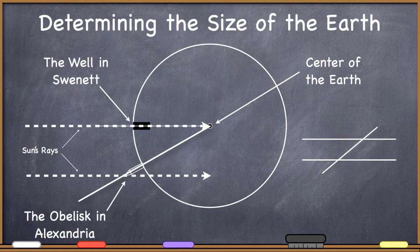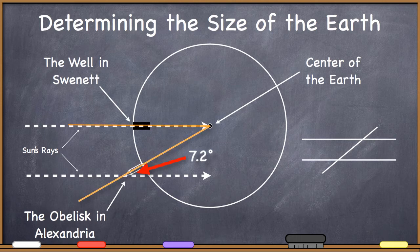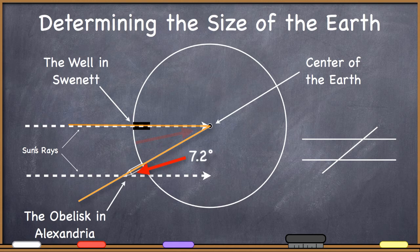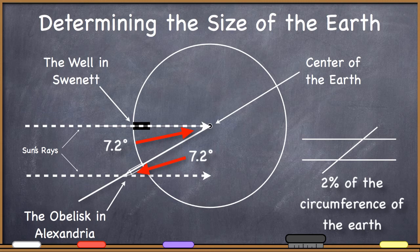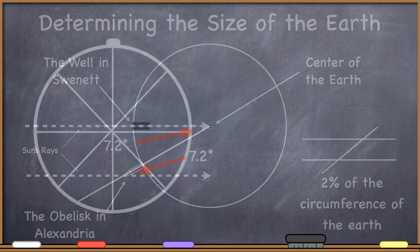Therefore, according to the laws of geometry, that also meant that the all-important angle through the well to the center of the earth and back through the center of the obelisk must also be 7 degrees and 12 minutes, or 2% of the circumference of the earth. Now all he needed to know was the actual distance between Alexandria and Swenet along the surface of the earth.